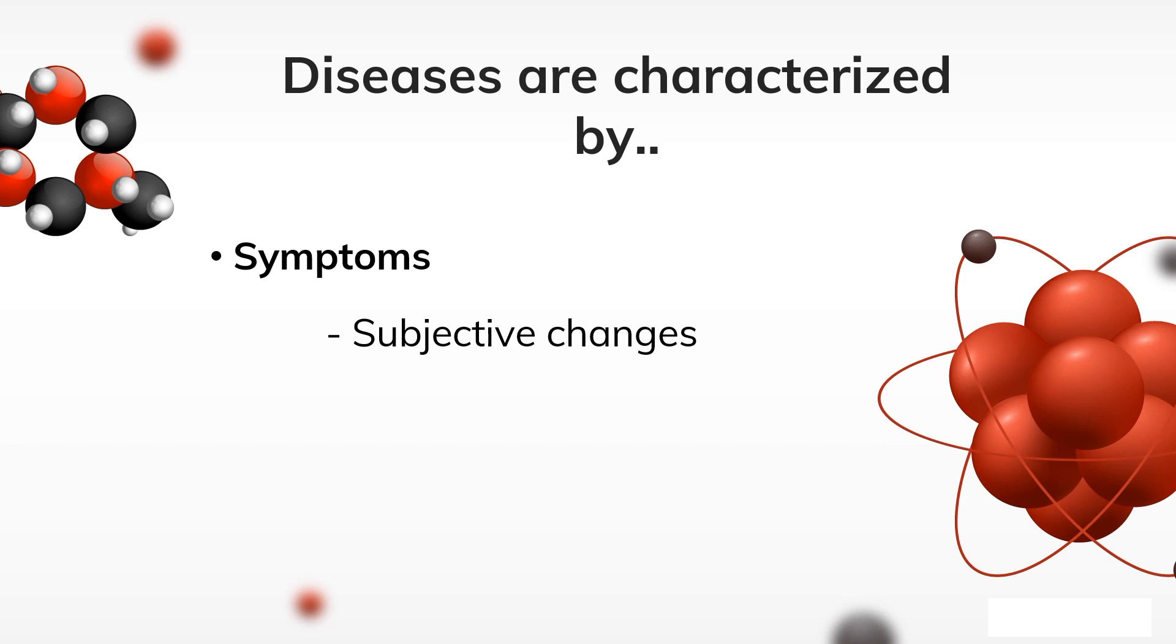Examples of symptoms are headache, nausea, and anxiety. Objective changes that a physician can observe and measure are called signs. Signs of disease can be either anatomical, such as swelling or rash, or physiological, such as fever, high blood pressure, or paralysis.